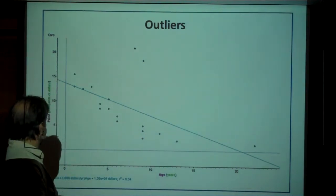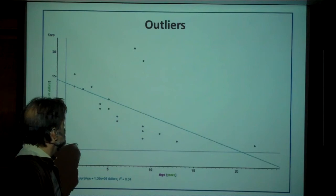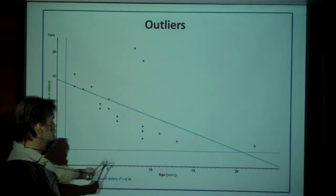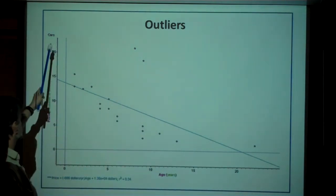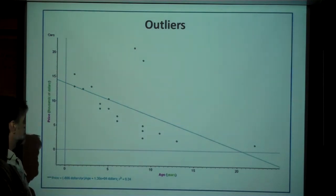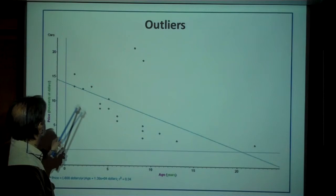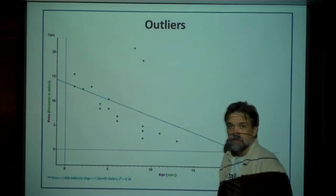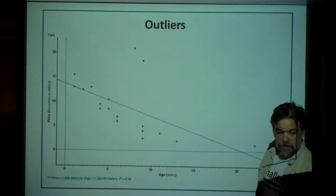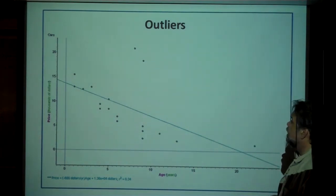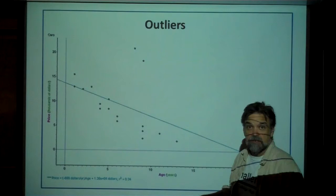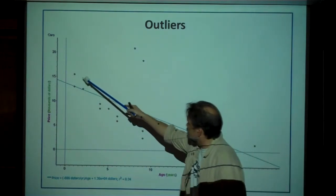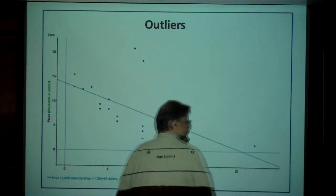Now let's talk about outliers. Here we have some used car data — age on the x-axis in years, price in thousands of dollars on the y-axis, ranging from just over a thousand dollars up to over twenty thousand, and age from one year up to more than 20 years. I notice a nice negative association, which is what you'd expect — cars get older, they're worth less. But there are three points that are kind of bugging me: this one here and these two over here.